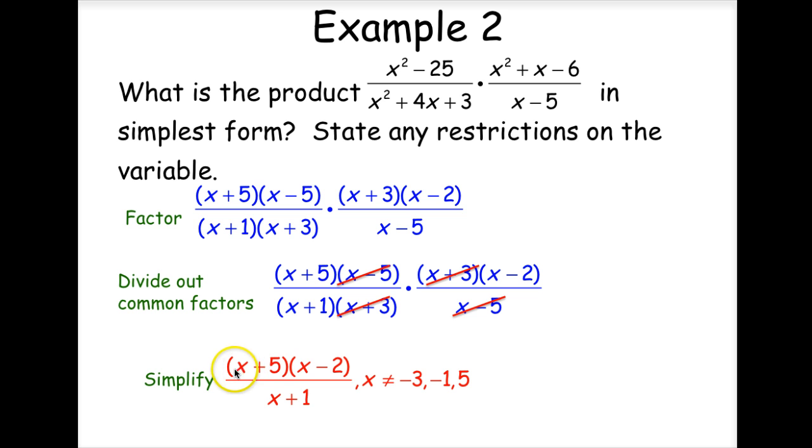So in simplest form, we have x plus 5 times x minus 2 over x plus 1. Our restrictions are x cannot equal negative 1, negative 3, or positive 5.